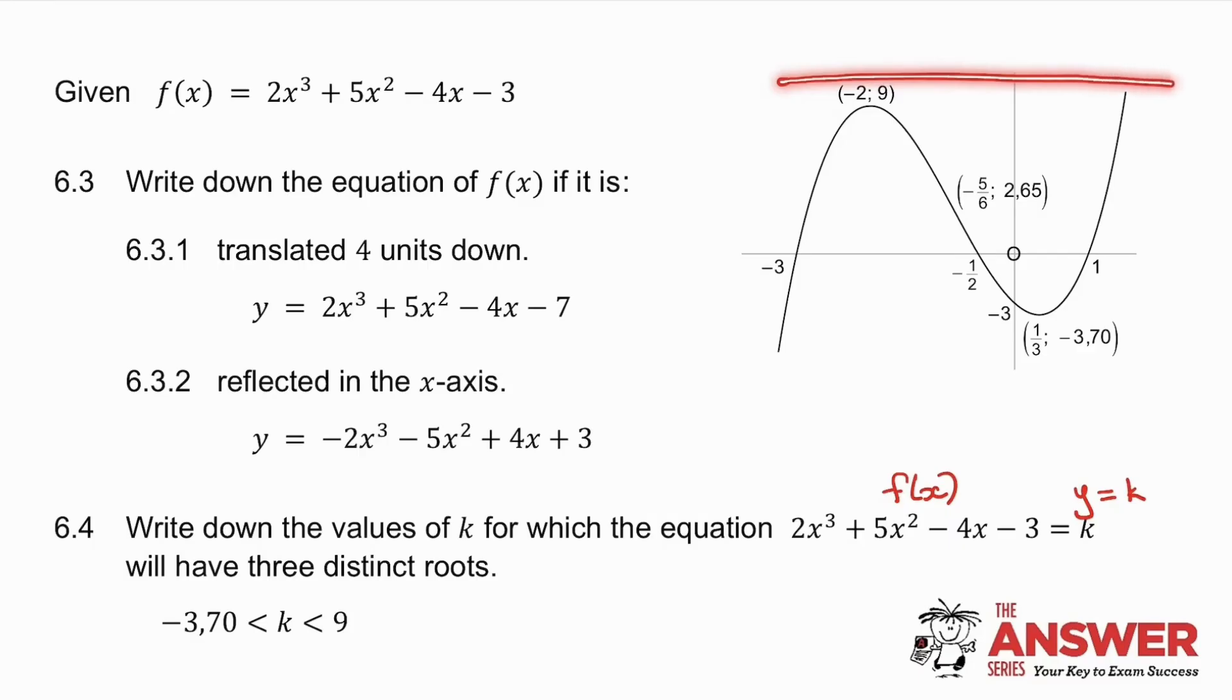Now, a horizontal line could cut my graph once. It could cut it twice. It could cut it three times. Three times. There it cuts it twice again. And below that, it cuts it only once. So I want to know, where does that horizontal line cut f(x) in three different places?